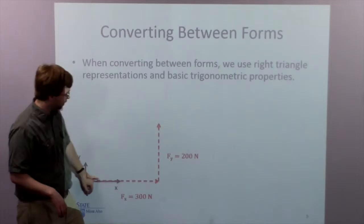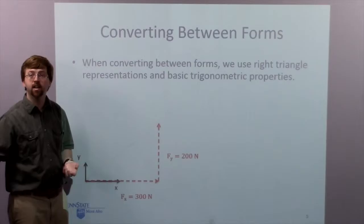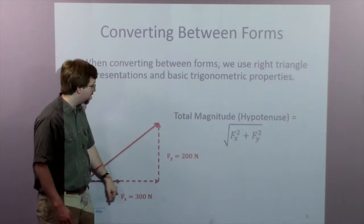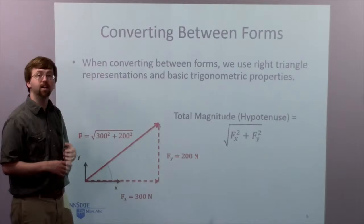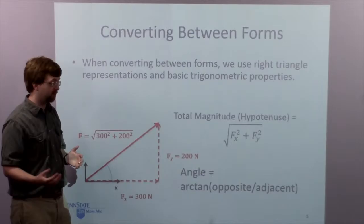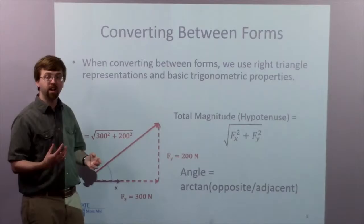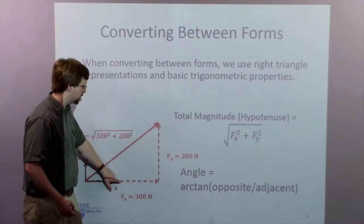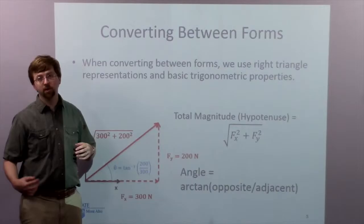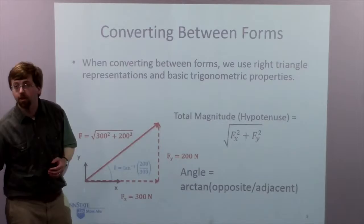Converting back from components to magnitude and direction: if I start with 300 Newtons in the x-direction and 200 in the y-direction, I draw in the original vector as the hypotenuse. To find the hypotenuse, I use the Pythagorean theorem — x-component squared plus y-component squared, take the square root, and that gives me the magnitude of my vector. To find the direction, I use the arctan function. The tangent is the opposite side over the adjacent side, so the inverse tangent of that ratio gives me the angle theta. You can set your calculator to give it in degrees or radians — just be sure you know which one you're working with.